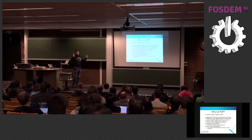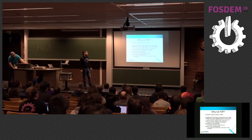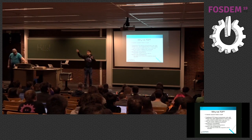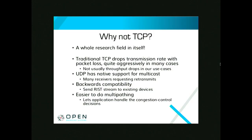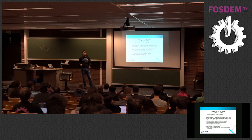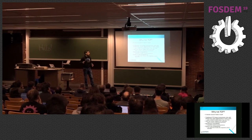Why not TCP? Traditional TCP drops transmission rates with packet loss — there's lots of work in other dev rooms on how they're changing that. In our use case, we don't generally have throughput drops per se — we just have random packet loss because of switch capacities and other reasons. This is usually a constant bit rate transport stream, and we want constant throughput with random packet loss fixed.